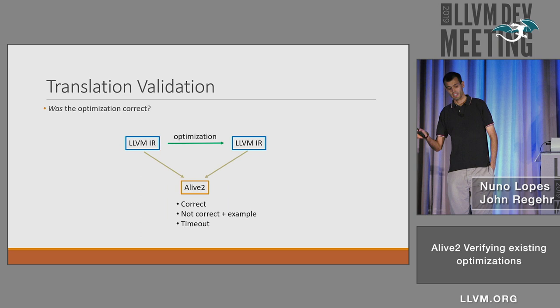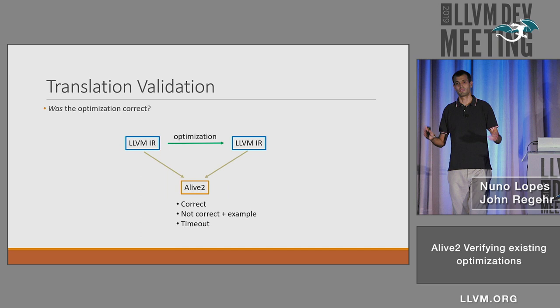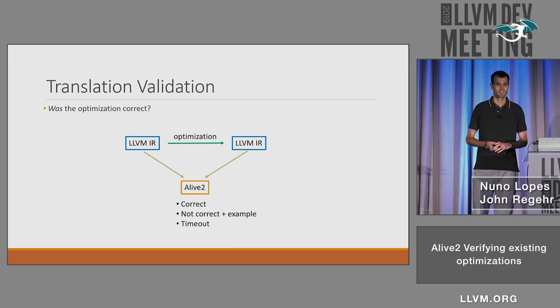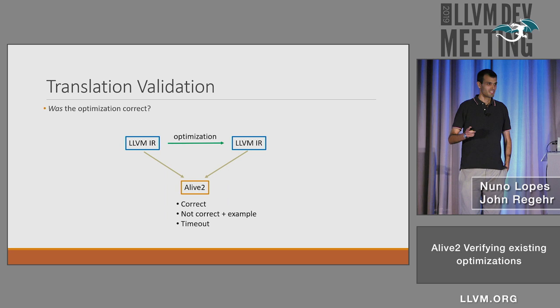Alive will tell you whether it's correct or not, and give you a counterexample. Sometimes it cannot tell you and will just timeout and give up. When it times out, it's basically because it's probably okay, but anyway.